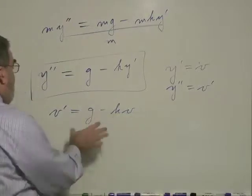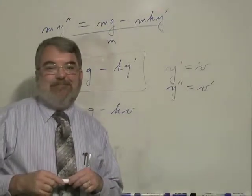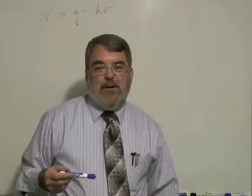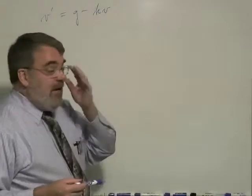So I'm going to erase the board, put this at the top, and we'll solve that little equation. So here we are. We've got v prime is g minus k v.